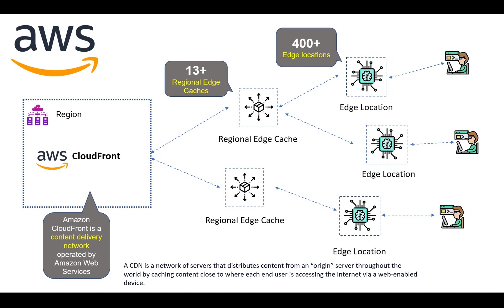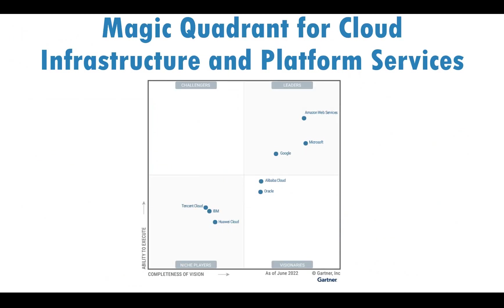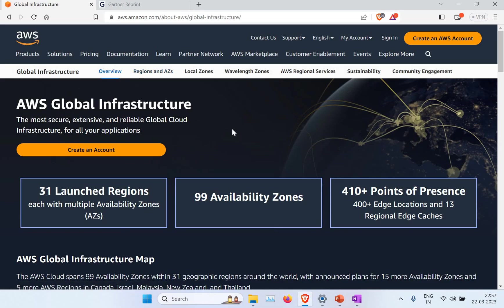Now a little bit about the Gartner Magic Quadrant. This detail comes from Gartner, and you can see that in the leaders section of cloud, Amazon Web Services is at the top. Looking at the quadrant — leaders, challengers, niche players, and visionaries — Amazon is at the top, followed by Microsoft, then Google, Alibaba, Oracle, and others like IBM. Currently Amazon Web Services is the top player providing cloud services, and I will also show the strengths and challenges of each provider.